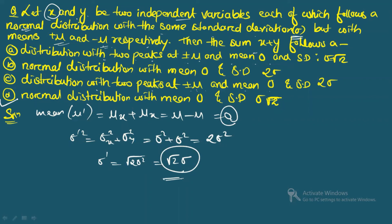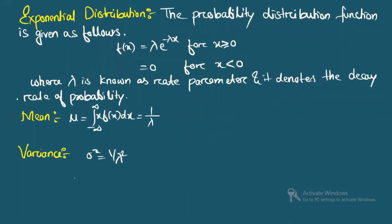Lastly, the exponential distribution is given by f(x) = λ · e^(−λx) for x ≥ 0, and 0 for x < 0. Here λ is the rate parameter representing the decay rate of probability. The mean is 1/λ and the variance is 1/λ².